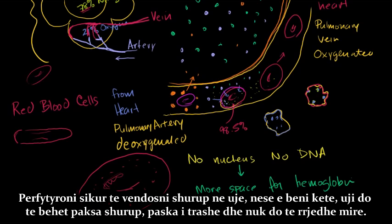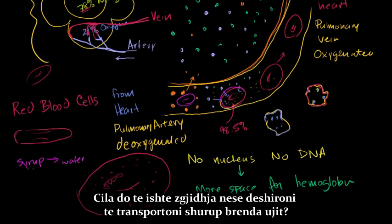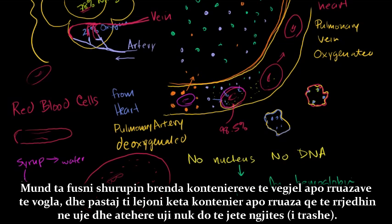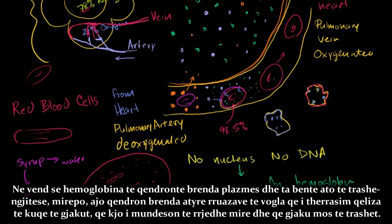Imagine if you wanted to put syrup in water. If you just put syrup straight into water, the water's going to become a little syrupy, a little bit more viscous, and not flow as well. So the solution is to put the syrup inside little containers or little beads, let the beads flow in the water, and then the water wouldn't be all gooey. That's exactly what's happening inside our blood — instead of having hemoglobin sit in the plasma and make it gooey, it sits inside these beads we call red blood cells, allowing the flow to remain non-viscous.